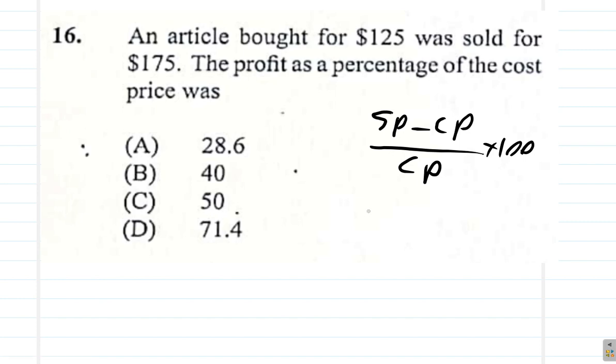So you sold it for $175. If you subtract the cost price of $125, the price that it cost you, then you would get—that would be 50 dollars—and divide it by the cost price of $125.